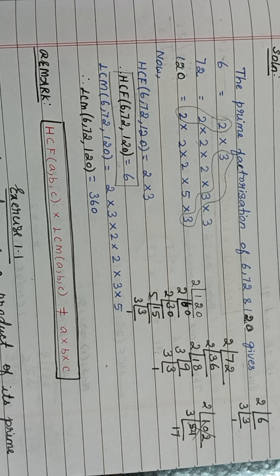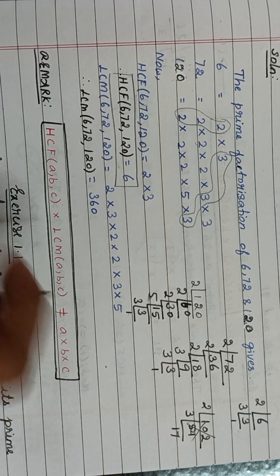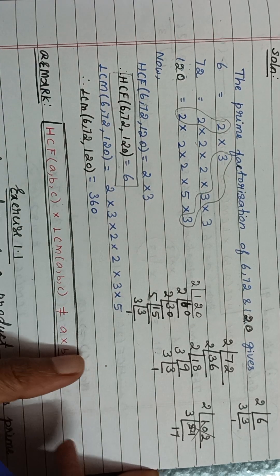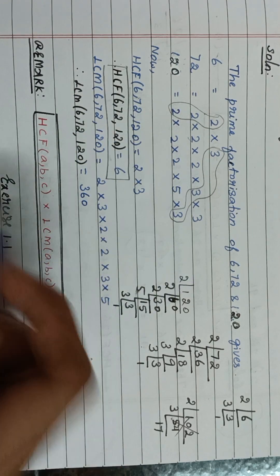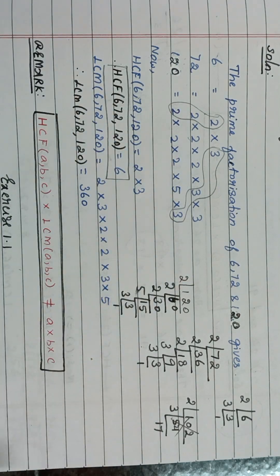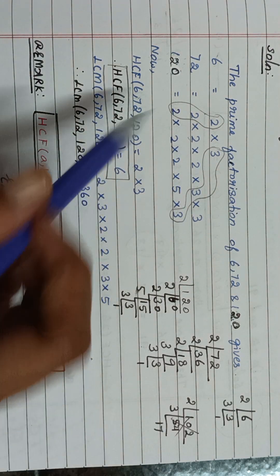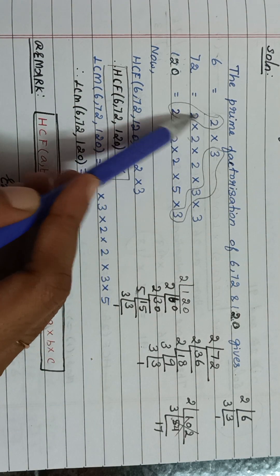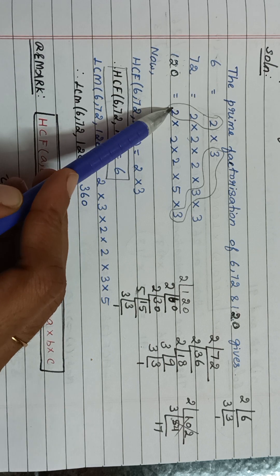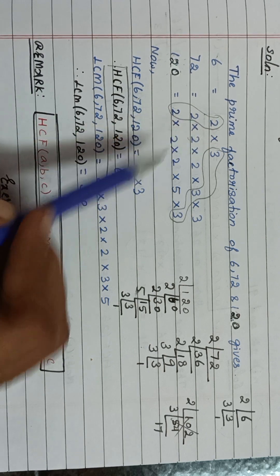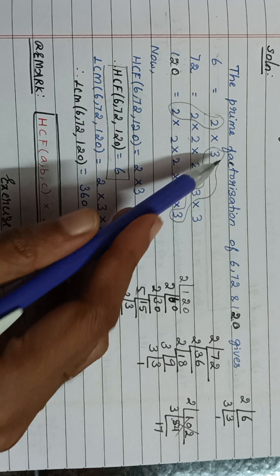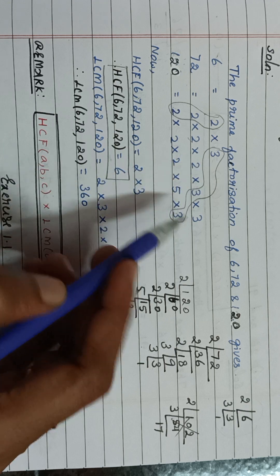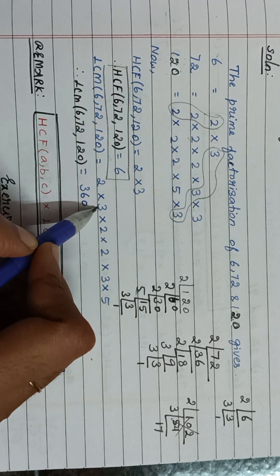Now find the LCM of the three numbers. First you write the number that is common in all three given numbers. Among these three, you write one 2, and among these three you write one 3.